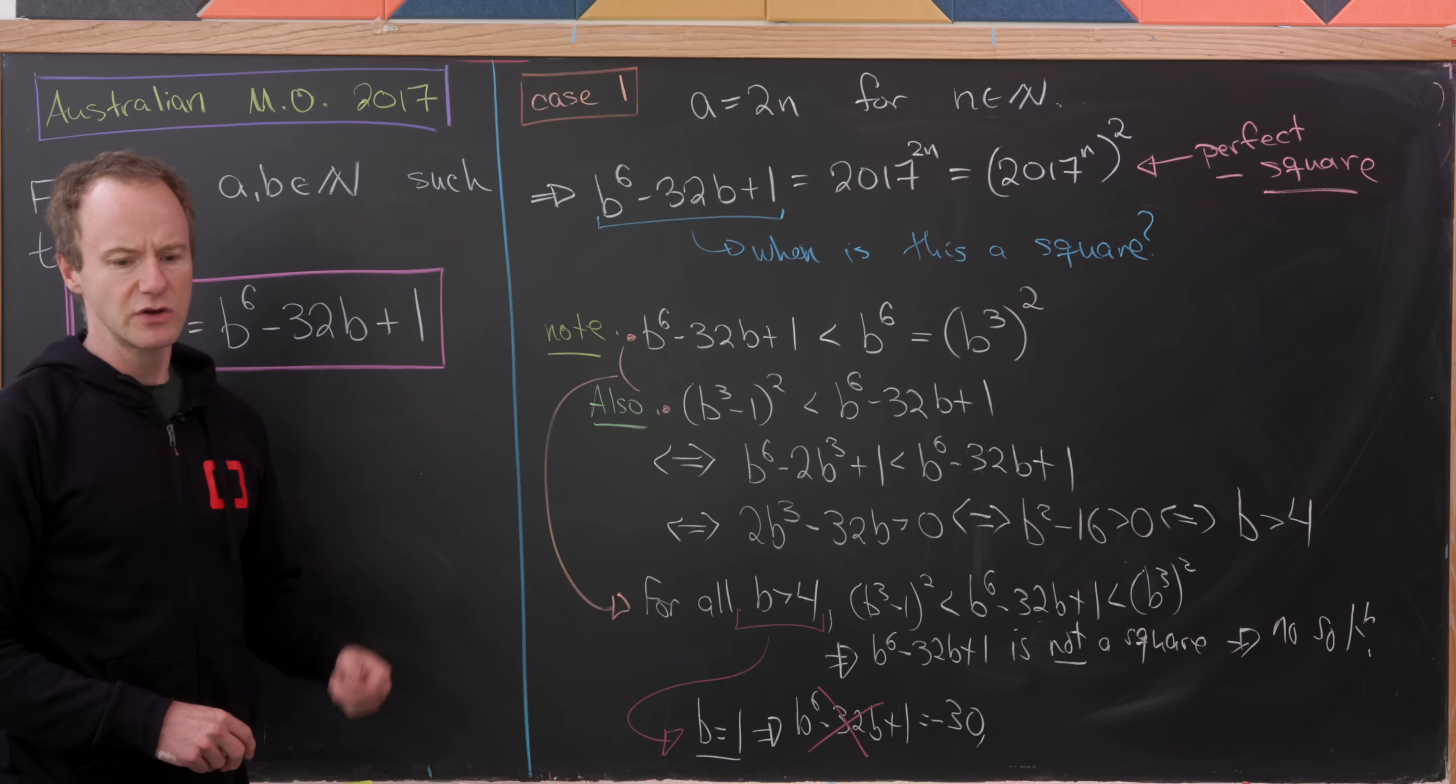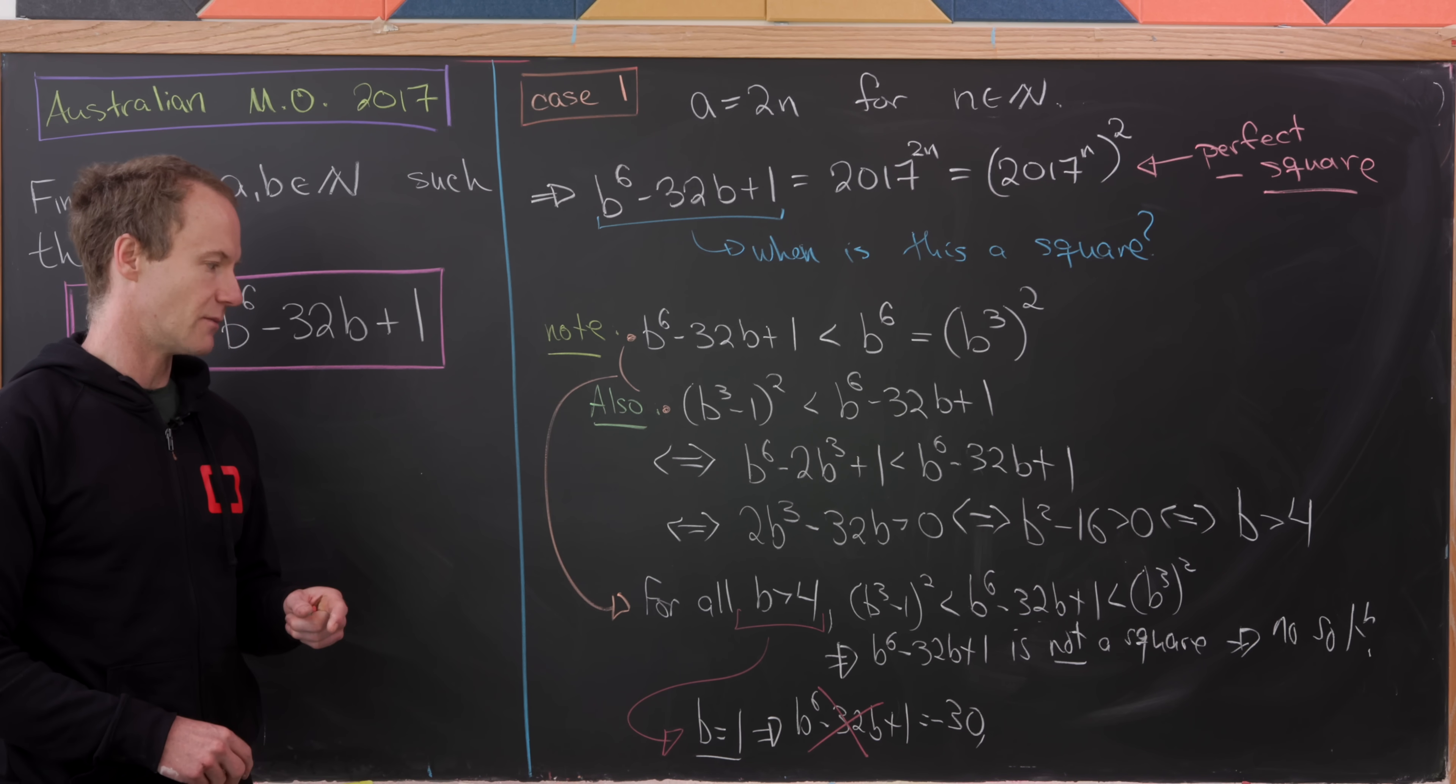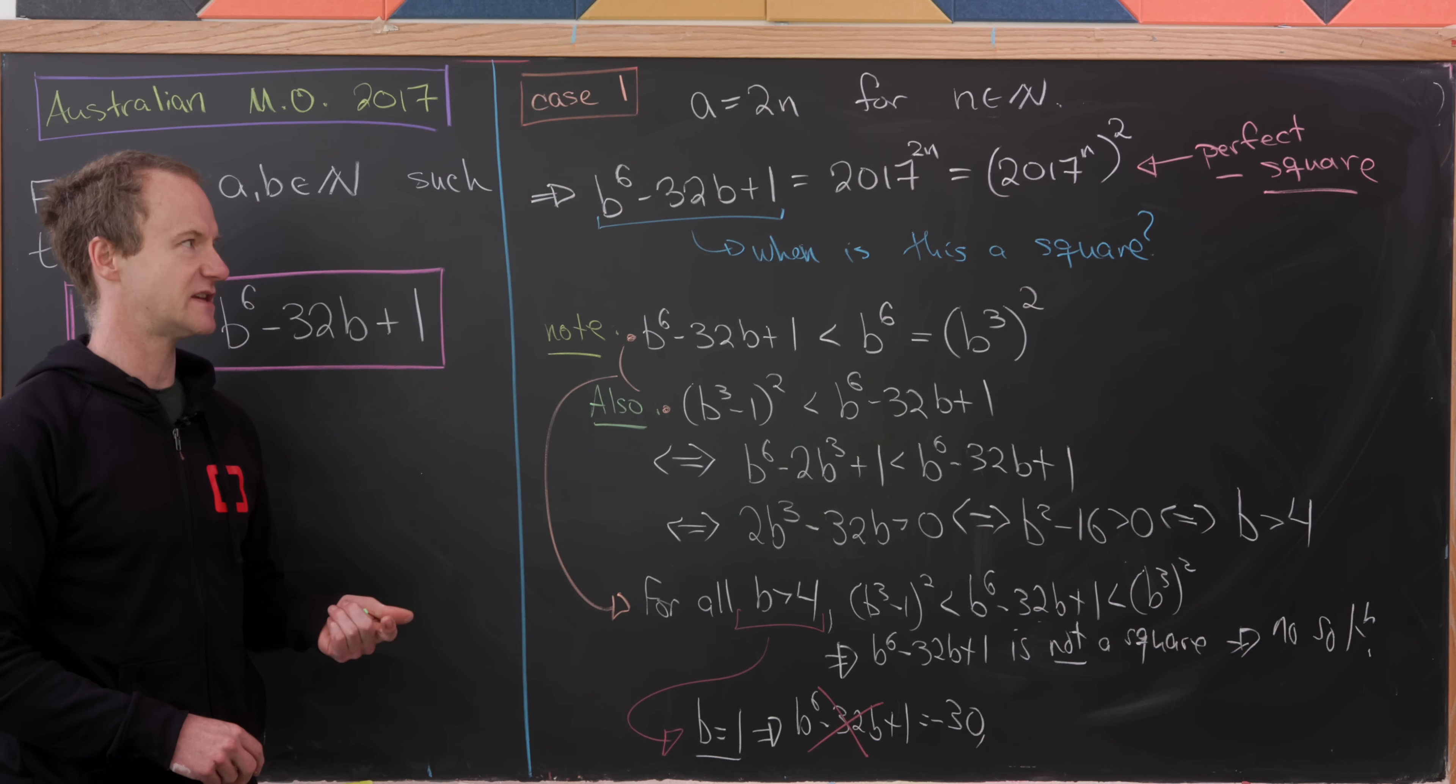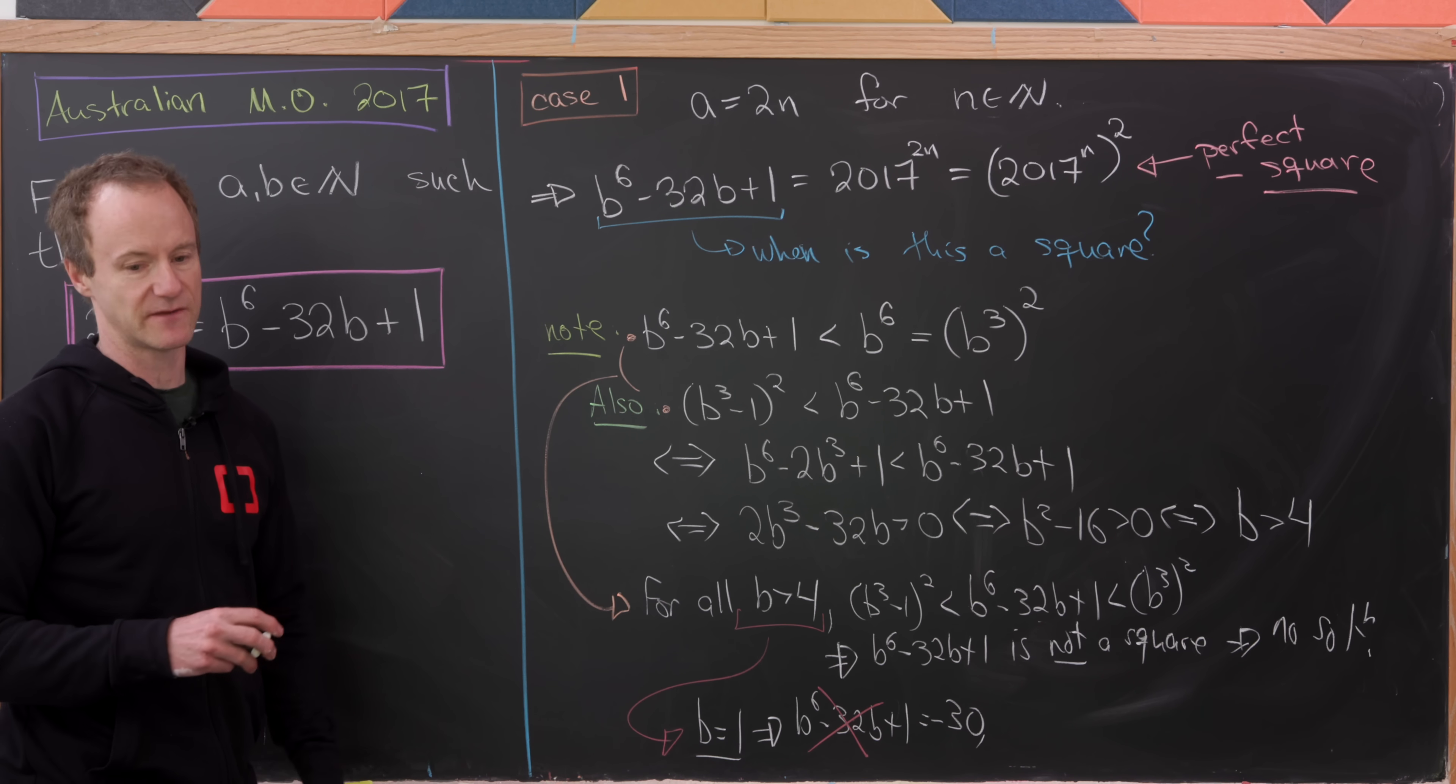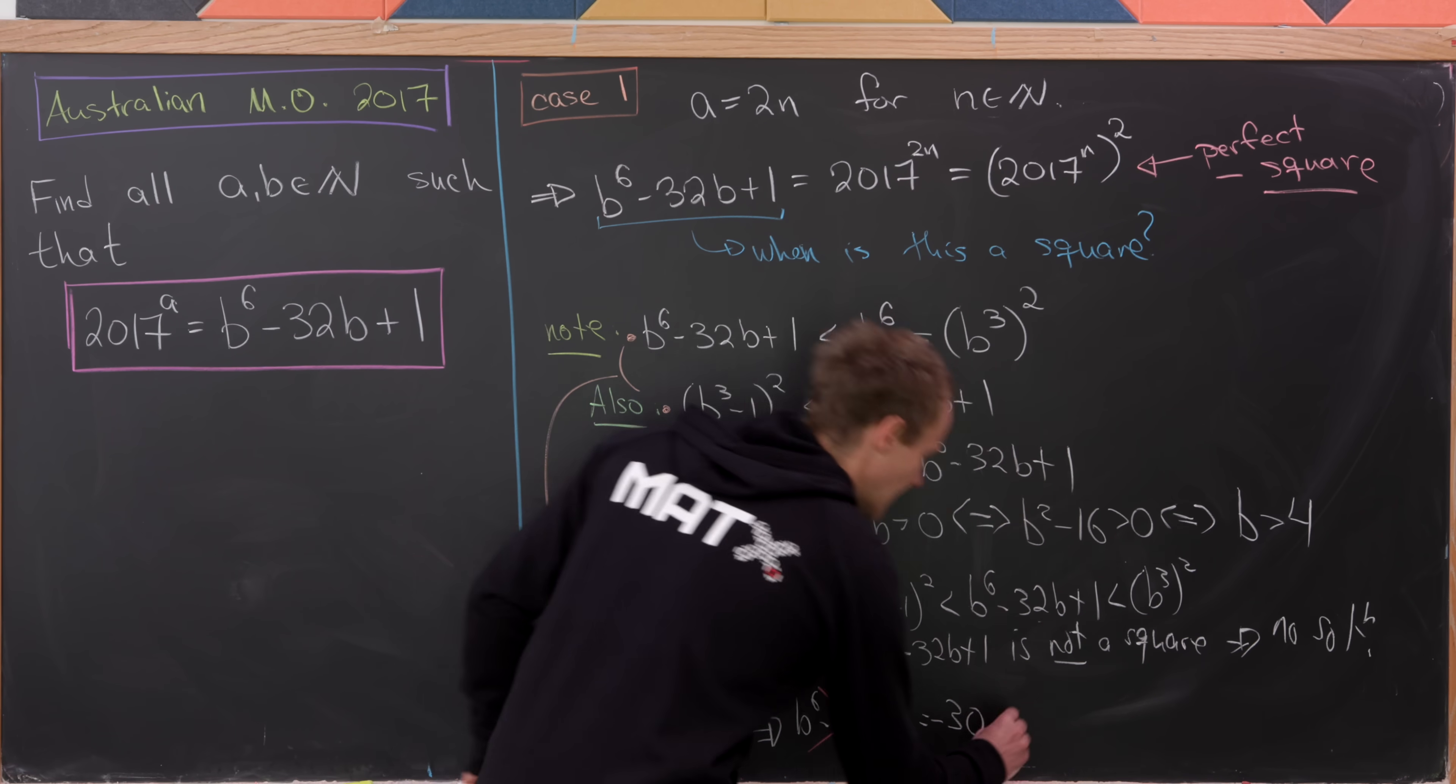And then you can check what happens if B is equal to 2. You actually get everything collapsing to the number 1, which is 2017 to the 0, which is one of those extended solutions, if you will. But we're not considering that.